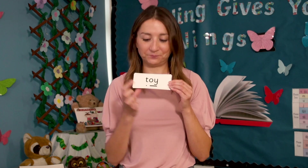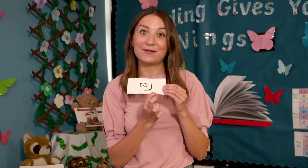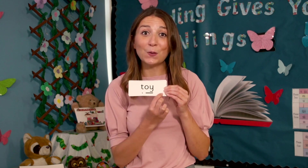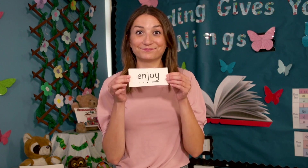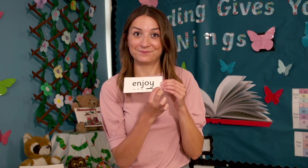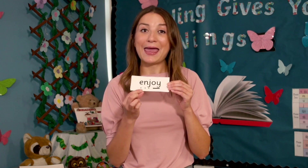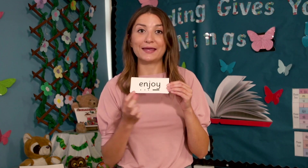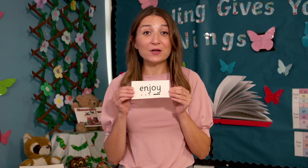Sound out and blend. Let's read the word together. T, oy — toy. Did you get it right? Let's read the word together. E, n, j, oy — enjoy. When we have lots of fun, we enjoy ourselves.